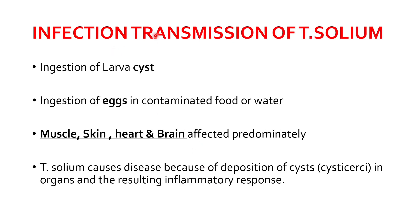Infection is transmitted by two ways: ingestion of larval cysts or ingestion of eggs in contaminated food or water. If food or water is contaminated with the egg of Taenia solium, an individual may acquire infection. Predominantly four organs are affected by Taenia solium: muscle, skin, heart, and the brain — in the brain it is known as neurocysticercosis. The larva is deposited in these organs and initiates an inflammatory response, leading to disease development.